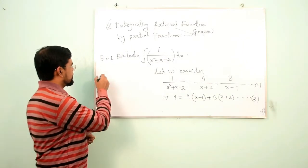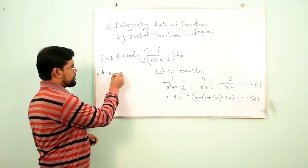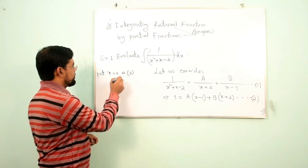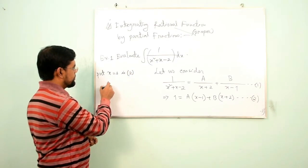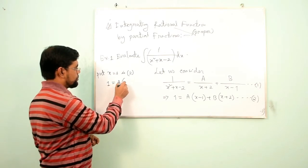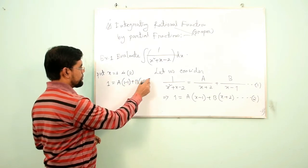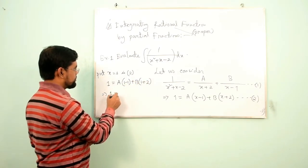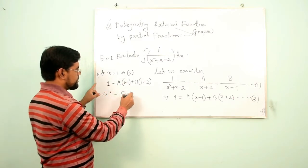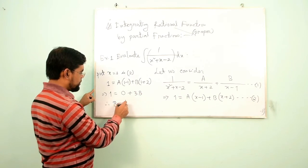We can do it by two ways. First, let us put x = 1 in Equation 2. We get 1 = A(1 − 1) + B(1 + 2), which implies 1 = 0 + 3B, therefore B = 1/3.